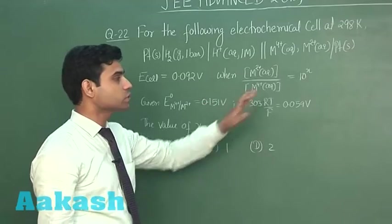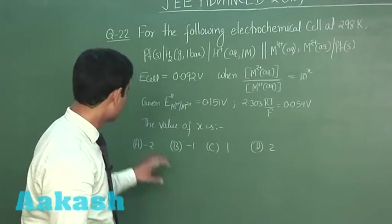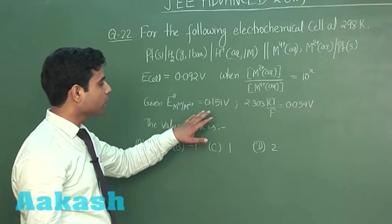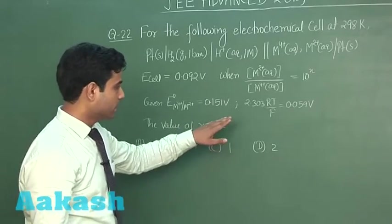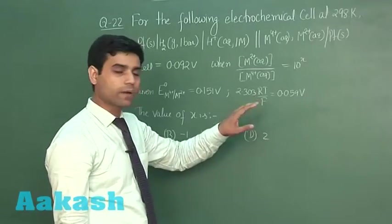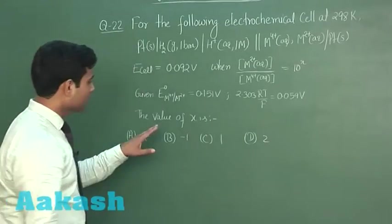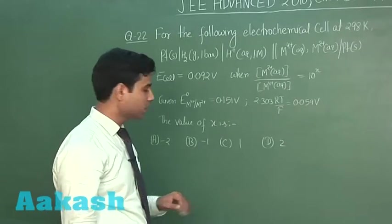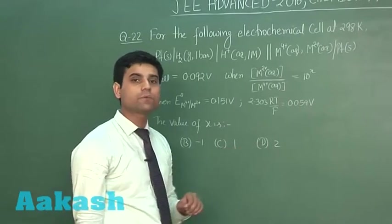Given E naught of M 4 plus to M 2 plus is 0.151 volt, and 2.303 RT upon F is 0.059 volt. The value of x is - the first option is minus 2, second option is minus 1, third option is 1, and the fourth option is 2.